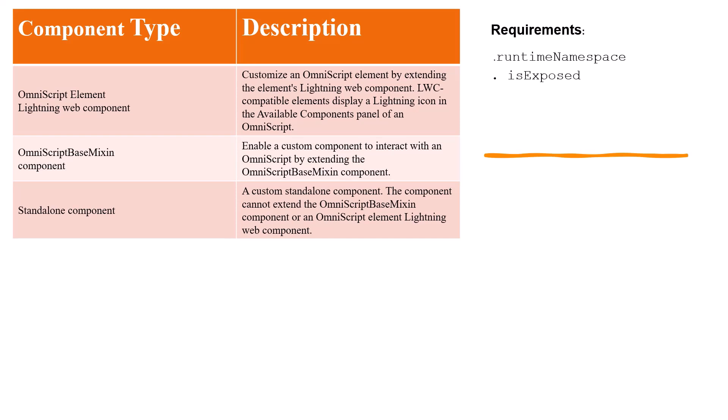We have three types of lightning web components for OmniScript. The first is the OmniScript element component, which is used to override a velocity element. The second is the OmniScript base mixin component, which enables a custom component to interact with OmniScript by extending the OmniScript base mixin component. The third type is the standalone component, which adds a custom standalone component that needs to extend the OmniScript base mixin component but does not need to override a velocity element.